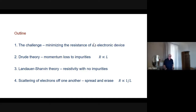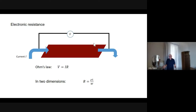Let me start. Ohm's theory tells us that when a current is flowing from left to right, there is no magnetic field — nothing complicated. When a current flows from left to right, there's a voltage, and the voltage is proportional to the current when both of them are small. The proportionality constant is called the resistance. In two dimensions, the resistance is proportional to the length and inversely proportional to the width of the sample.